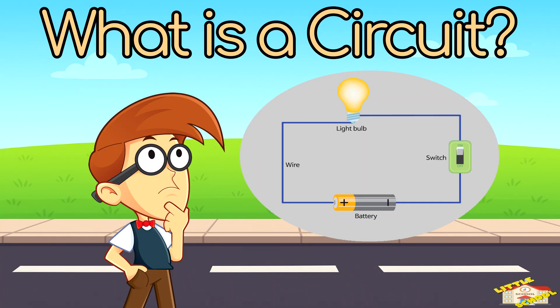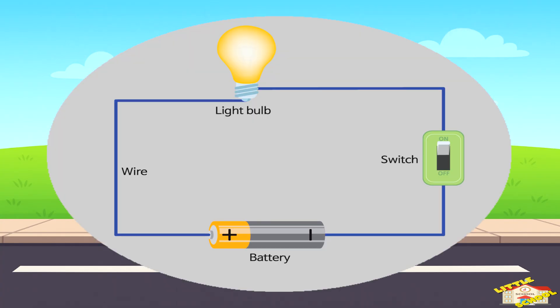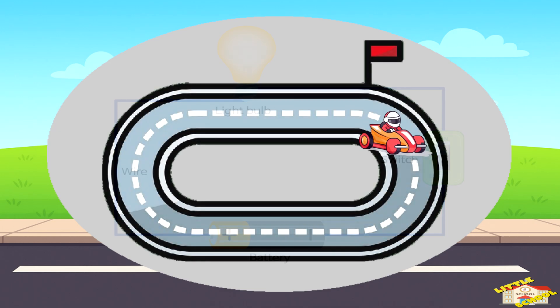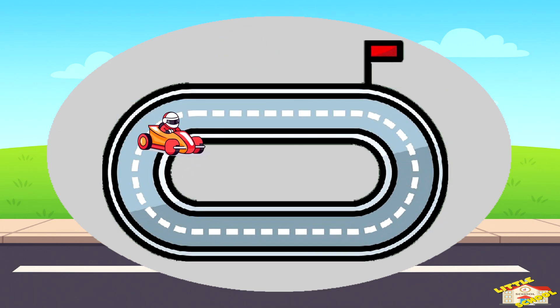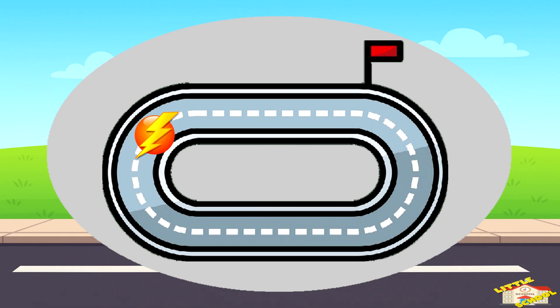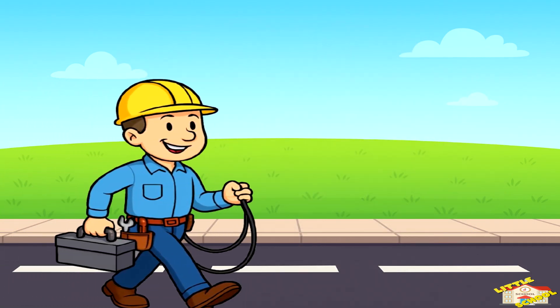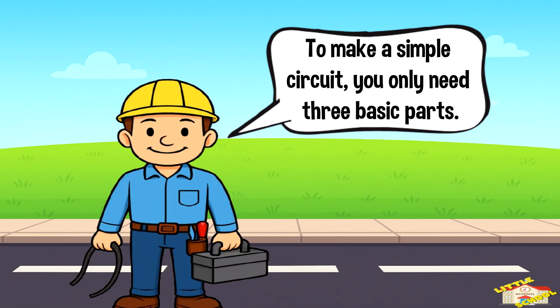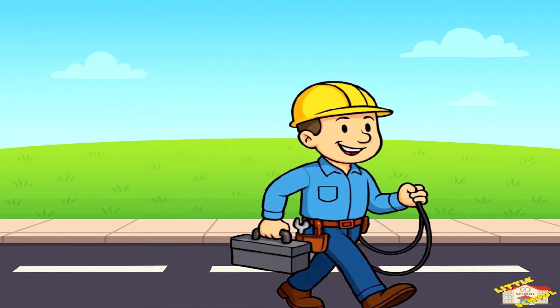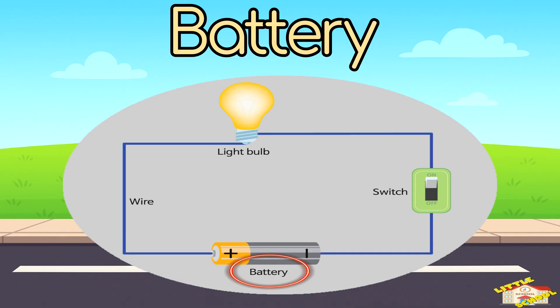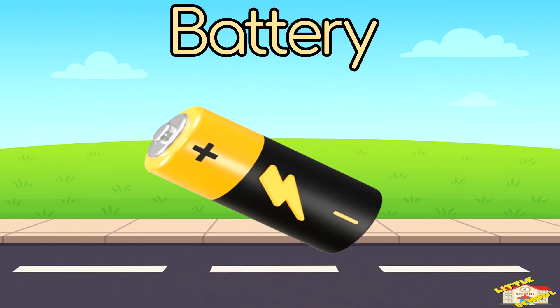What is a circuit? A circuit is like a pathway that electricity follows. Think of it like a racetrack, but instead of cars, electricity travels around it. To make a simple circuit, you only need three basic parts. Number one: battery. The battery is the source of energy.